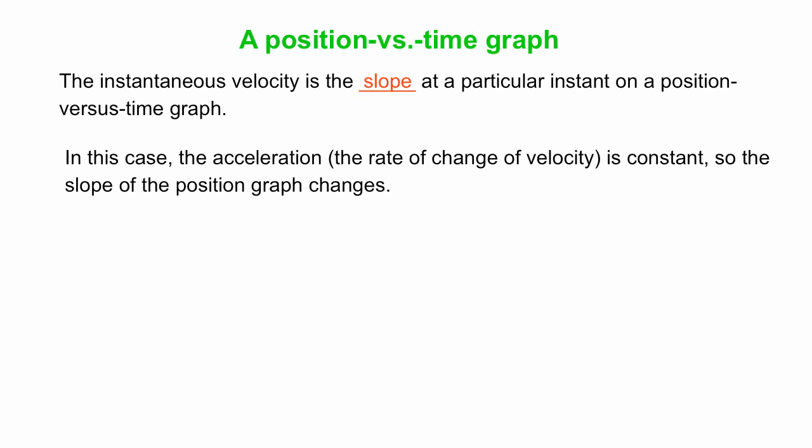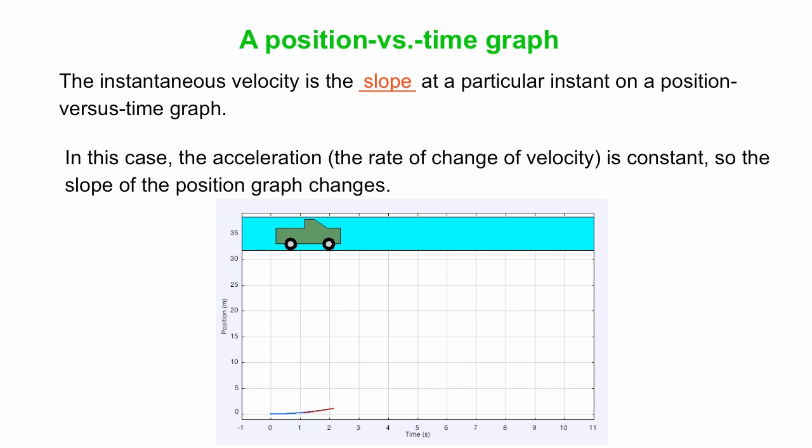On the other hand, if we have an acceleration instead, and the acceleration, the rate of change of velocity, is constant, then the slope of the position graph steadily changes, like so. So, here the truck starts from rest, gradually gets faster and faster and faster as time goes by, and you can see the slope of the graph steadily increases. Okay. So that's a big difference on the position versus time graph for constant velocity or constant acceleration.